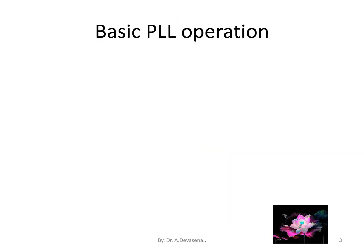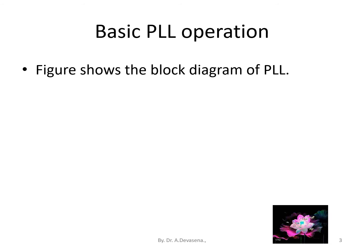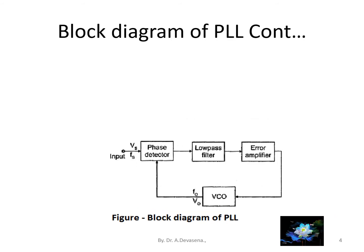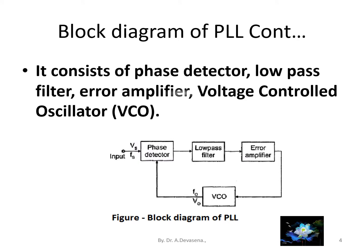Basic PLL operation. The figure shows the block diagram of PLL. The input is applied to the phase detector. The output from the phase detector is applied to the low pass filter. The output from the low pass filter is applied to the error amplifier, and from the error amplifier it is applied to the VCO. The output from the VCO is applied back to the phase detector. It consists of a phase detector, low pass filter, error amplifier, and voltage controlled oscillator, that is VCO.